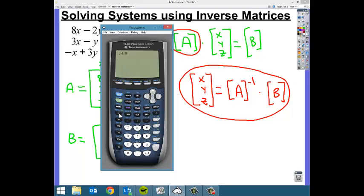The inverse button is right below math. And then we're going to multiply that by matrix B. So go back to your matrix menu and just select matrix B. So our home screen should look like this. Then when we press enter, what we get is negative 2, negative 3, and 4.